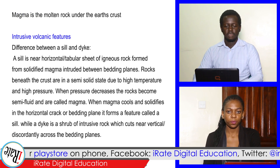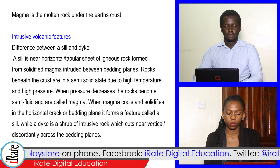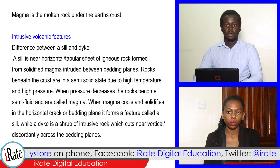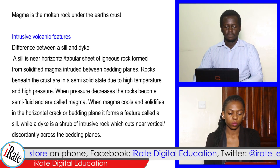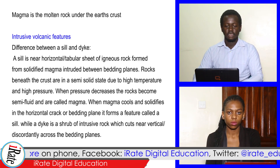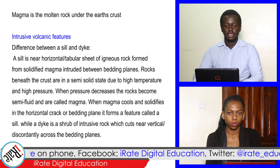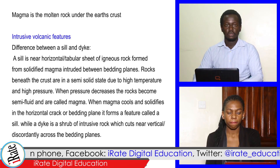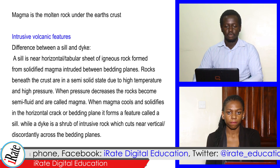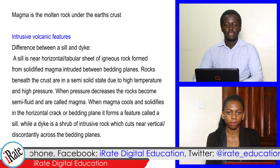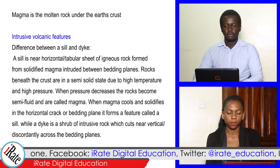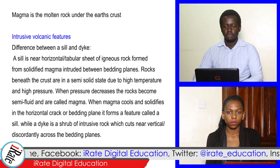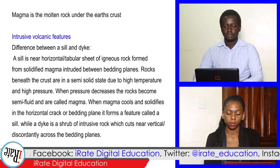Magma is the molten rock under the earth's crust. Intrusive volcanic features — the difference between a sill and a dike: a sill is a near-horizontal or tabular sheet of igneous rock formed from solidified magma intruded between bedding planes.